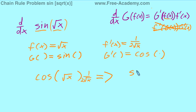Simplifying things down, we're going to get cosine of the square root of x over 2 root x as our answer.